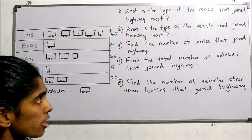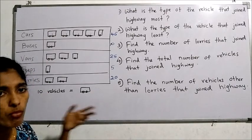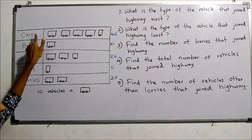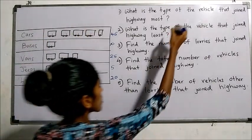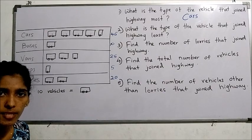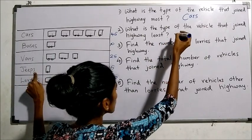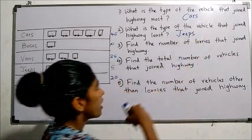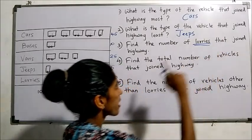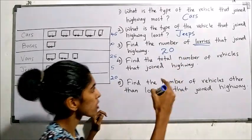Question 1: what type of vehicle joined the highway most? The greatest number is 45, so cars joined the highway most. Next, what type of vehicle joined the highway least? The minimum number — that is jeeps. Fewer jeeps joined the highway. Next, find the number of lorries that joined the highway — it's easy now: 20 lorries.